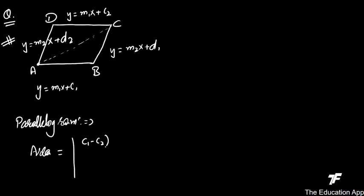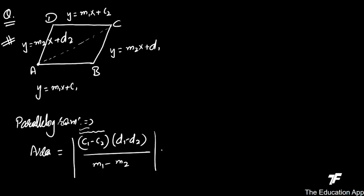The area of a parallelogram formed by these four lines is: |c1 - c2| × |d1 - d2| / |m1 - m2|. That is, the product of the differences of the constants of the parallel pairs, divided by the difference of the slopes. This avoids having to find all four vertices separately.